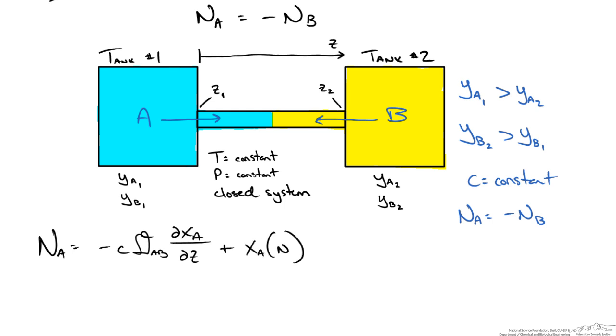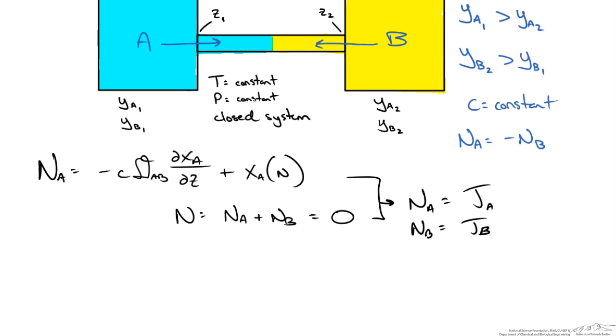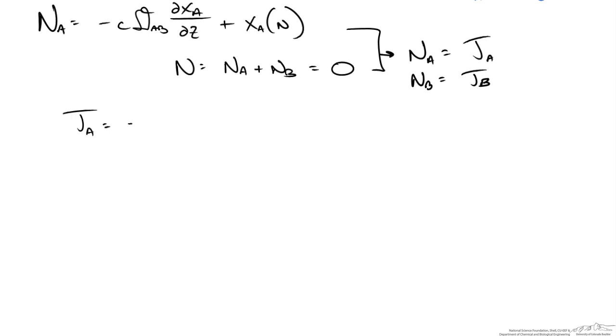Now in this case we are saying that our net flux N is equal to NA plus NB. We have a binary system and NA is equal to negative NB, so this must be equal to 0. This means the net molar flux of A is just equal to the diffusive flux of A, in this case JA. This also means the same for B and therefore by relationship the diffusive fluxes must be equal and opposite.